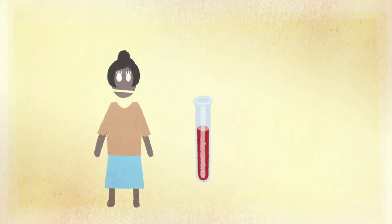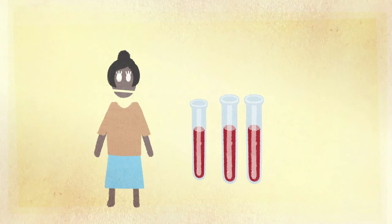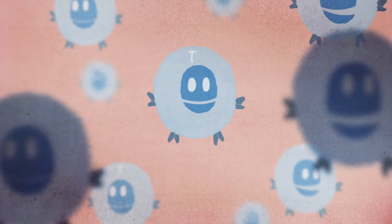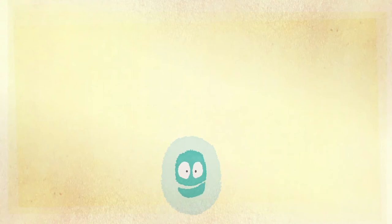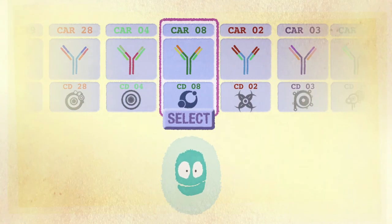This therapy first removes the T lymphocyte cells, also known as T killer cells, from the patient and then modifies them in a laboratory. As these cells were taken from the patient, each CAR T cell produced is specific to that person.